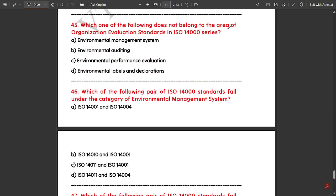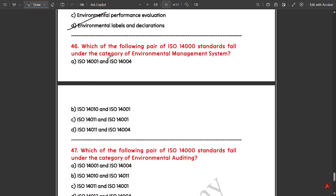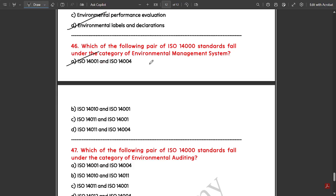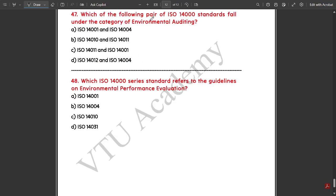Which one of the following does not belong to the area of organization evaluation standards in ISO 14000 series? Environmental labels and declarations. Which pair of ISO 14000 standards fall under the category of environmental management system? ISO 14001 and ISO 14004.